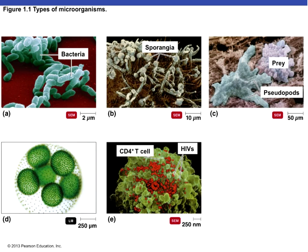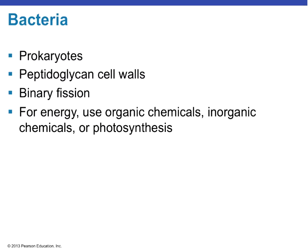Here's a representative example of bacteria — these rod-shaped cells are called bacilli. We also have fungi with their sporangia budding off to colonize elsewhere, protozoa such as an amoeba-type organism using its pseudopod to engulf prey, and algae such as Gloeocapsa. The large green structure is a T cell — a eukaryotic cell — and all the small red dots are HIV viruses attempting to enter that T cell.